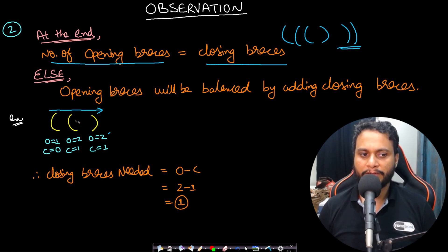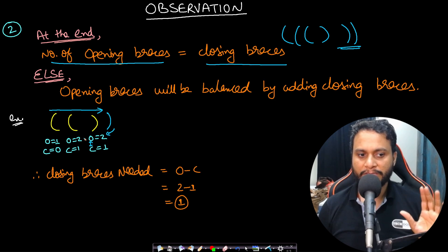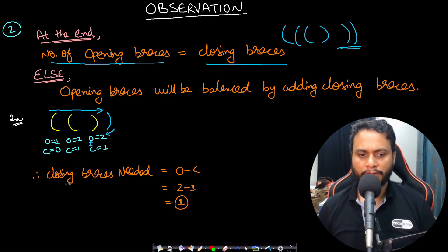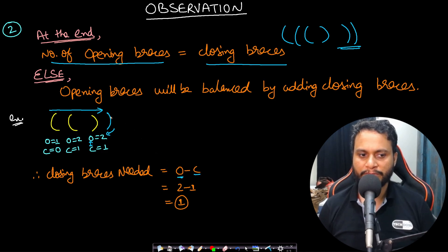If opening brackets are more, then at the end the opening and closing counts don't match up. You need to add the difference — for example, two minus one — closing brackets at the end. So the closing brackets needed equals the number of opening brackets minus the number of closing brackets, which is one in this case.